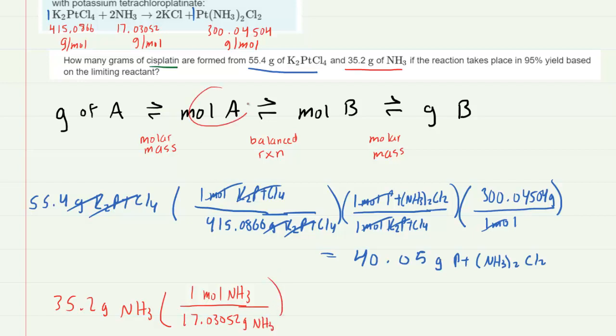Next we will go from moles of NH3 to moles of the product using the balanced coefficients. We can see here that two moles of NH3 will react to form one mole of the product. So we have to be more careful here and write that two moles of NH3 will form one mole of the product. I'm just going to write product here for now because the formula is so long.